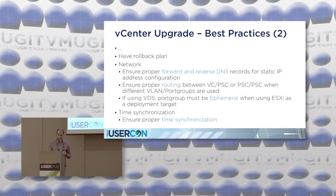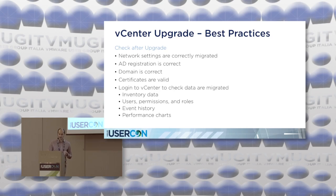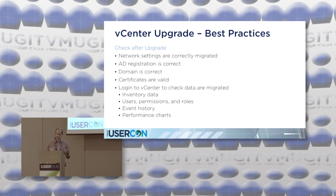Once you've successfully upgraded the vCenter Server, there are some post-upgrade procedures to follow. Check that the networking settings are correctly preserved — verify you can access the vCenter Server as you did before. Check that the AD registration is correct and you can log in with different AD users. Verify the domain is correct, certificates are valid, and that you can log into the vCenter Server and see everything — inventory data, users, statistic events, and tasks.